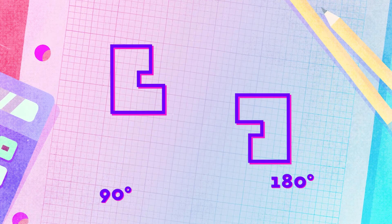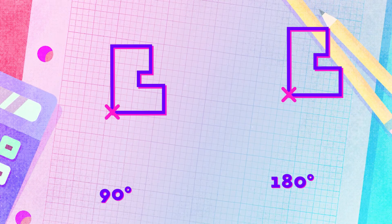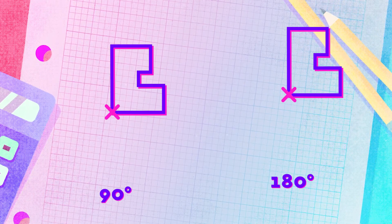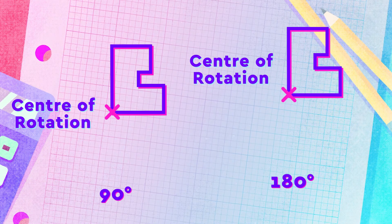In both of the examples shown, there's a point in the shape that remains on the same point both before and after the shape is turned. This point is known as the center of rotation.